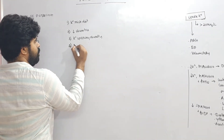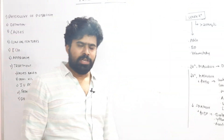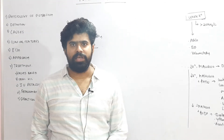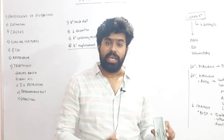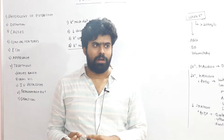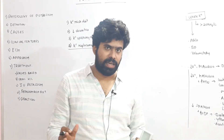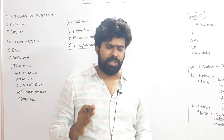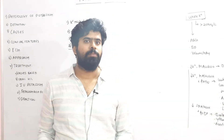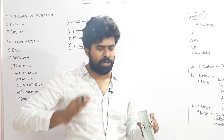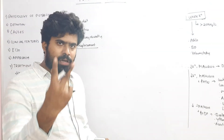Before potassium replacement, ensure the patient has adequate urine output. Patients with oliguria likely have AKI or CKD; in such patients, giving potassium or drugs like ACE inhibitors, ARBs, or potassium-sparing diuretics carries a risk of hyperkalemia. Think twice before starting replacement in these cases, because hypokalemia has a better prognosis than hyperkalemia acutely. Always under-correct potassium rather than over-correct to stay on the safer side.